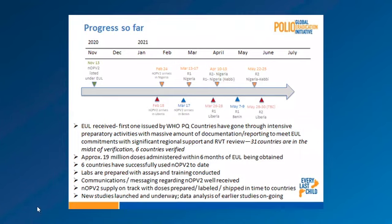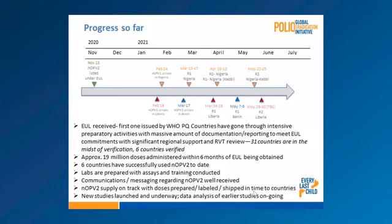We're glad to see that we have rolled out the vaccine in six countries already. Approximately 19 million doses have been used, and as countries are verified, the vaccine is being shipped and campaigns are being planned. NOPV supply is on track to respond to outbreaks. We are also seeing new studies being launched — clinical studies are ongoing, as well as safety studies. Every country using NOPV is producing safety data being analyzed by the CDC team.